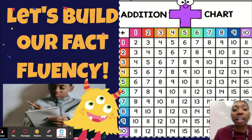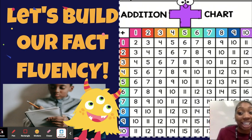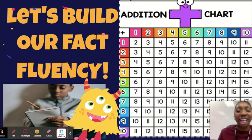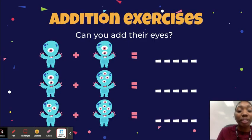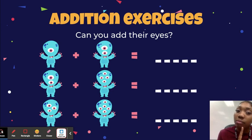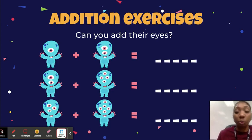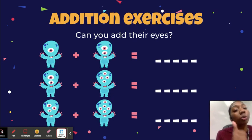But before we get into our lesson, it's very important that we build our fact fluency. Fact fluency is just how quickly you know your math facts. It's very important that every day you help to build that fact fluency to help you become a better mathematician. So let's start with a simple exercise — addition.